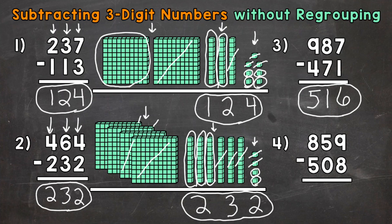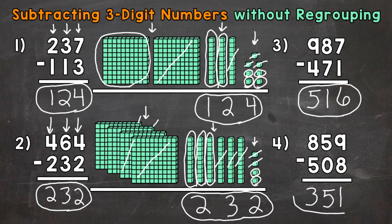And then lastly, number four: we have 859 minus 508. Start with the ones — nine ones minus eight, nine minus eight gives us one. Move to the tens where we have five tens minus zero, five minus zero gives us five. And then lastly, the hundreds: eight minus five, eight hundreds minus five hundreds, that's going to give us a three in the hundreds place. A final answer of 351 for number four.